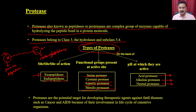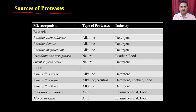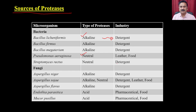Proteases are a potential target for developing therapeutic agents against fatal diseases such as cancer and AIDS because of their involvement in the life cycle of causative organisms. Microorganisms are a good source of proteases. Different bacteria like Bacillus licheniformis, Bacillus firmus, Bacillus amyloliquefaciens, Pseudomonas, and Streptococcus produce different types of proteases like alkaline or neutral proteases, useful in the detergent and food industry. Fungi such as Aspergillus, Endothia, and Mucor also produce acid or alkaline proteases used in detergent, leather, pharmaceutical, and food industries.